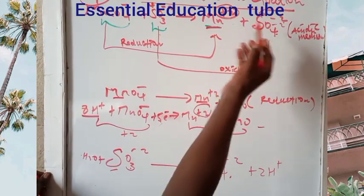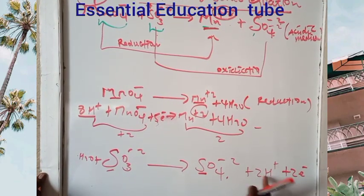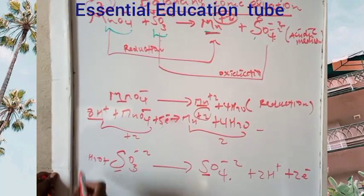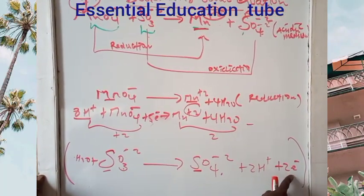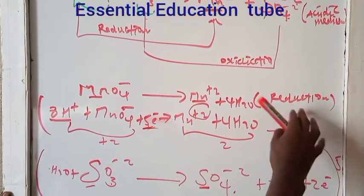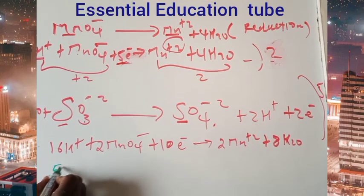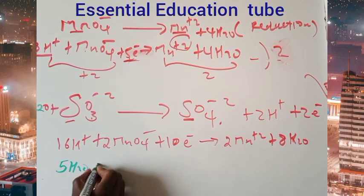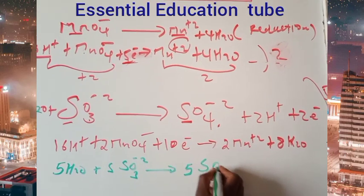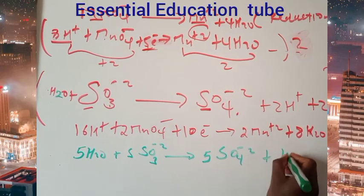In this case, sulfur at +6 loses 2 electrons: 2 plus 2, then 2 minus 2 equals 0 — this is balanced. To equalize electrons, we multiply: 5 electrons on each side. Multiply the oxidation half-reaction by 5 to get 5 molecules of water and 5 moles of sulfate ion, giving 5SO4²⁻ plus 10H⁺.